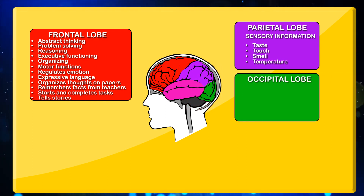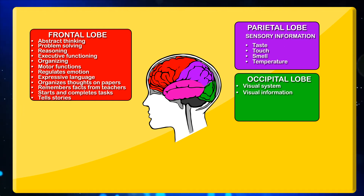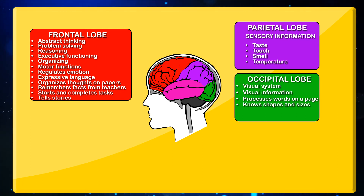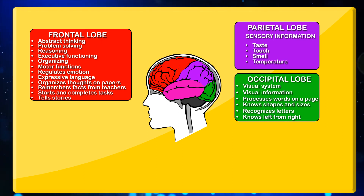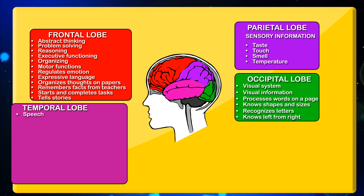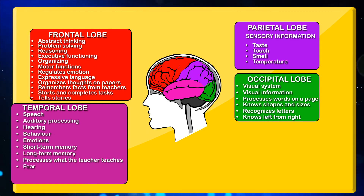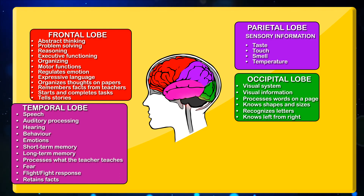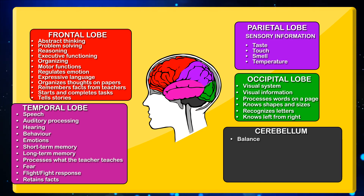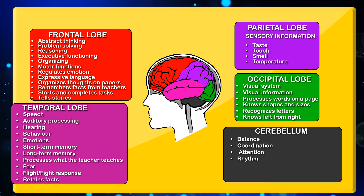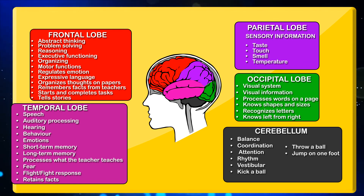The occipital lobe takes care of the visual system and visual information — it processes words on a page, recognizes shapes and sizes, identifies letters, and distinguishes left from right. The temporal lobe takes care of speech, auditory processing, hearing, behavior, emotions, short-term memory, and long-term memory. It processes what the teacher teaches, handles fear and fight-or-flight responses, and retains facts. The cerebellum is important for balance, coordination, attention, and rhythm — activities like kicking or throwing a ball, jumping on one foot, and riding a bike.